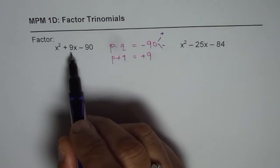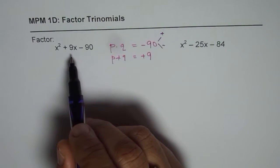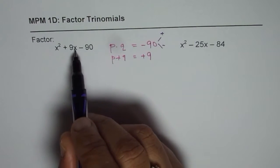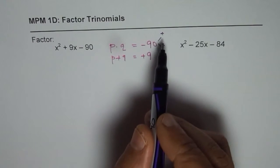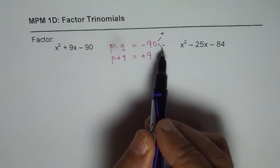So 9 really means that the numbers are kind of close they are not very far away it is not like 2 times 45. They are kind of close. So that their difference is 9. One is positive one is negative their difference is 9.